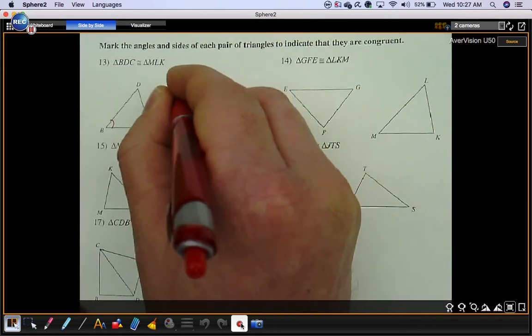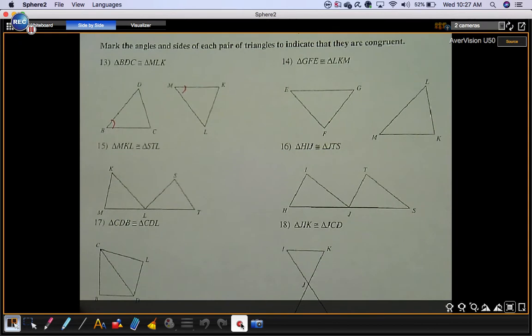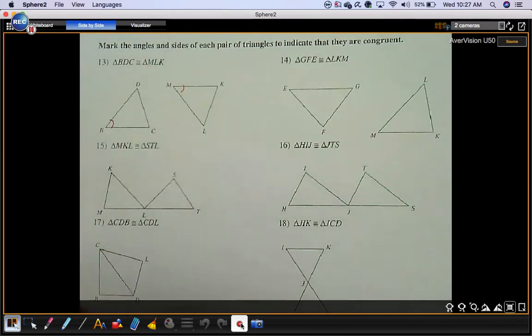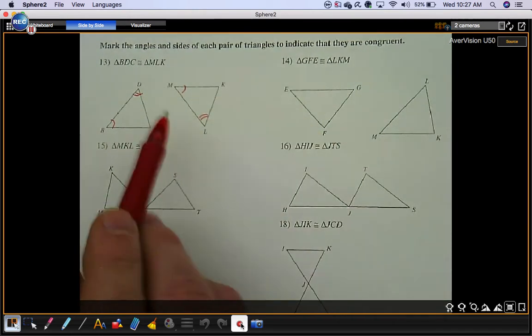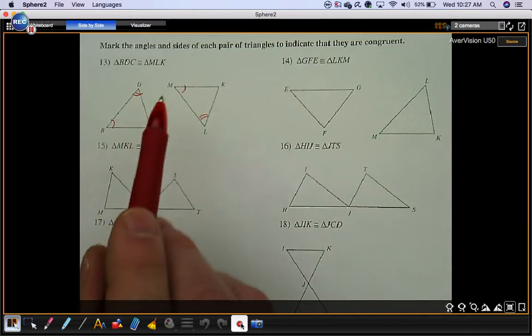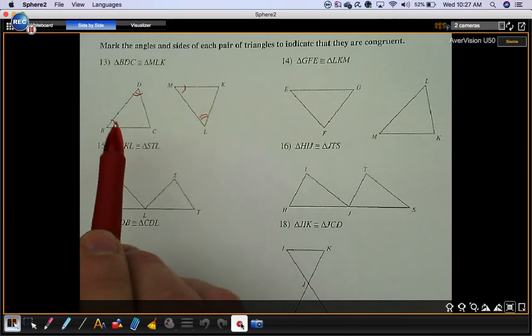Angle D is congruent to angle L, so I'm going to put matching arcs on those angles. Now notice how I use two arcs here because I already used one arc.